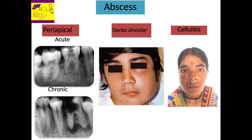Suppuration in the periapical region following periapical periodontitis leads to accumulation of pus, which is called an abscess. If there is a collection of pus in the periapical region with a mild bulge over the alveolar mucosa, it is a periapical abscess. If it is a localized intraoral or extraoral swelling, it is a dento-alveolar abscess. If it is a diffuse extraoral swelling, it is called cellulitis. Radiographs of all three are more or less similar, showing radiolucency involving the pulp, widening of the periodontal ligament space, loss of lamina dura, with or without a periapical radiolucent lesion.